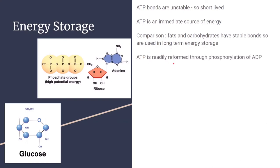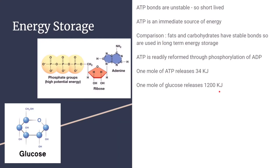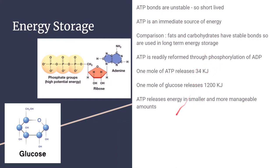ATP is readily reformed through the phosphorylation of ADP, making it a very good immediate source of energy. One mole of ATP releases 34 kilojoules of energy, while one mole of glucose releases 1200 kilojoules. ATP releases energy in much smaller, more manageable amounts, meaning we don't waste as much energy as we do with glucose. If we only need a small amount of energy for a small reaction, ATP allows us to create these small packages of energy that are just the right amount.